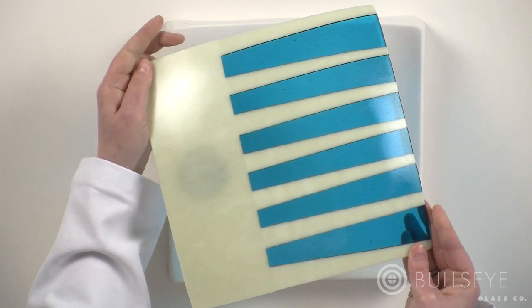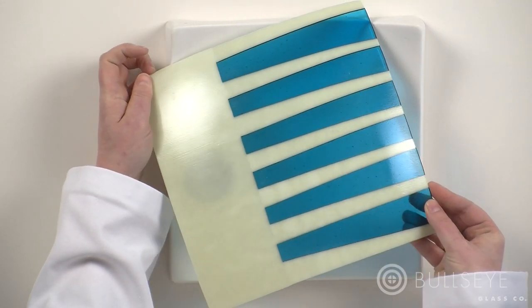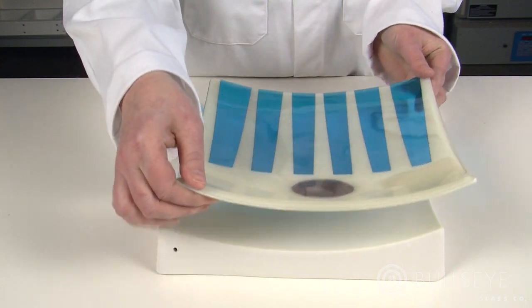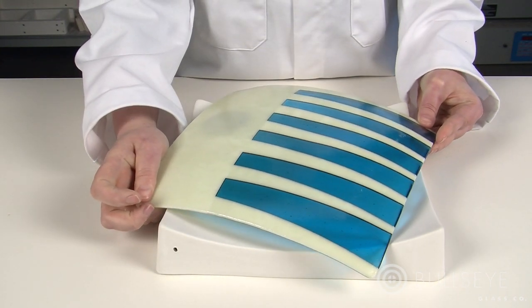Ceramic molds expand and contract less than glass when heated and cooled. They are generally best suited for slumping into because upon cooling, the glass will contract away from the mold.